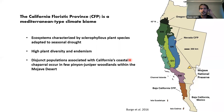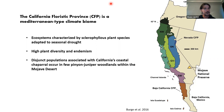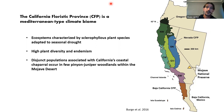The California Floristic Province is a classic Mediterranean-type climate biome broken into various subsections. It is characterized by sclerophyllous plant species with thick desiccation-resistant leaves adapted to seasonal summer drought. It is considered a biodiversity hotspot with remarkable endemism — many plant species occur naturally only in the California Floristic Province and nowhere else on Earth. There are disjunct, isolated populations associated with coastal chaparral found in a few pinyon-juniper woodlands here in the Mojave Desert.